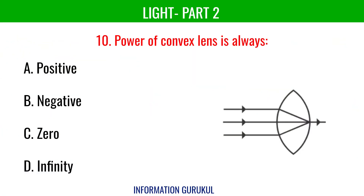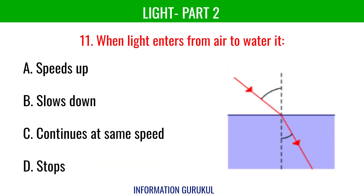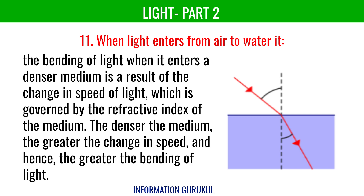Power of a convex lens is always positive. When light passes from air to water, it slows down. The bending of light when it enters a denser medium is a result of the change in speed of light, which is governed by the refractive index of the medium. The denser the medium, the greater the change in speed, and hence the greater the bending of light.